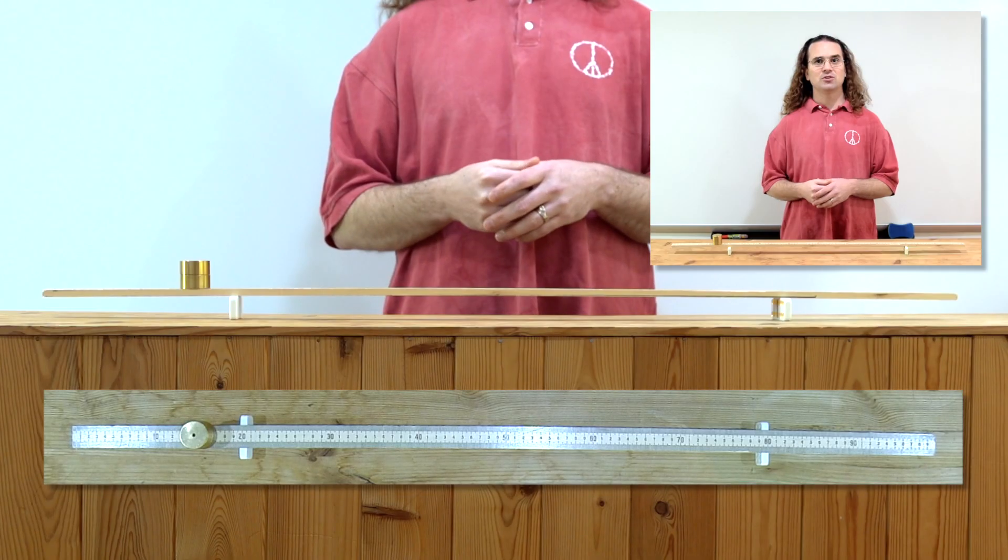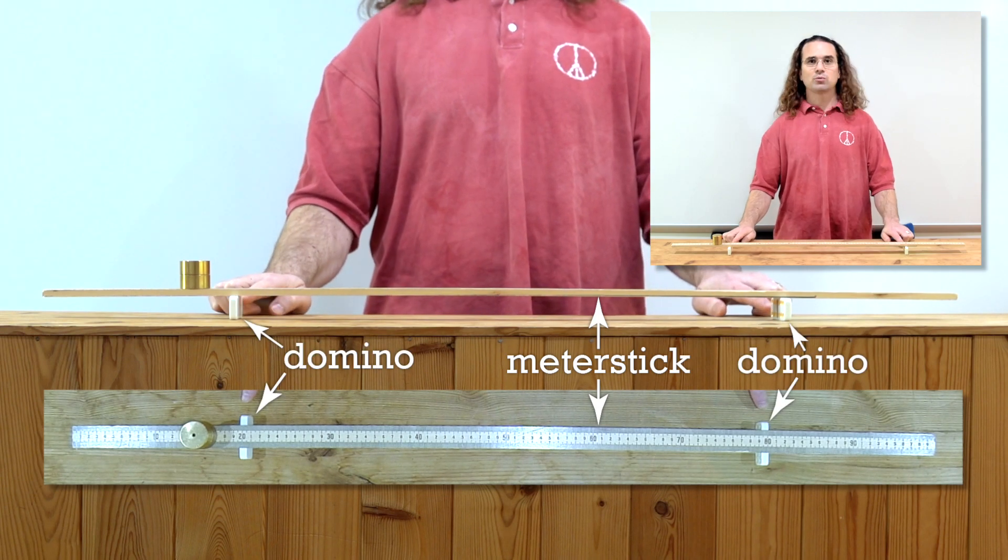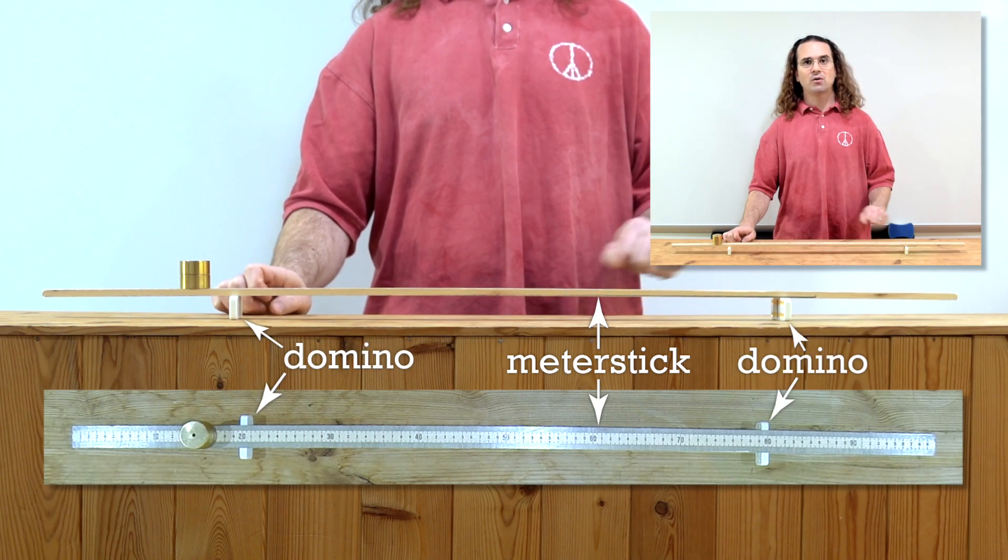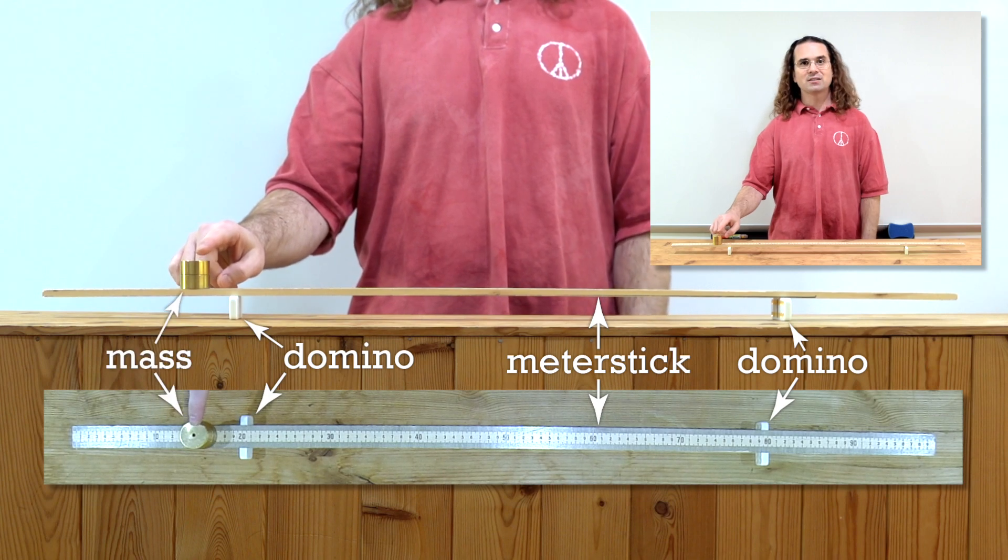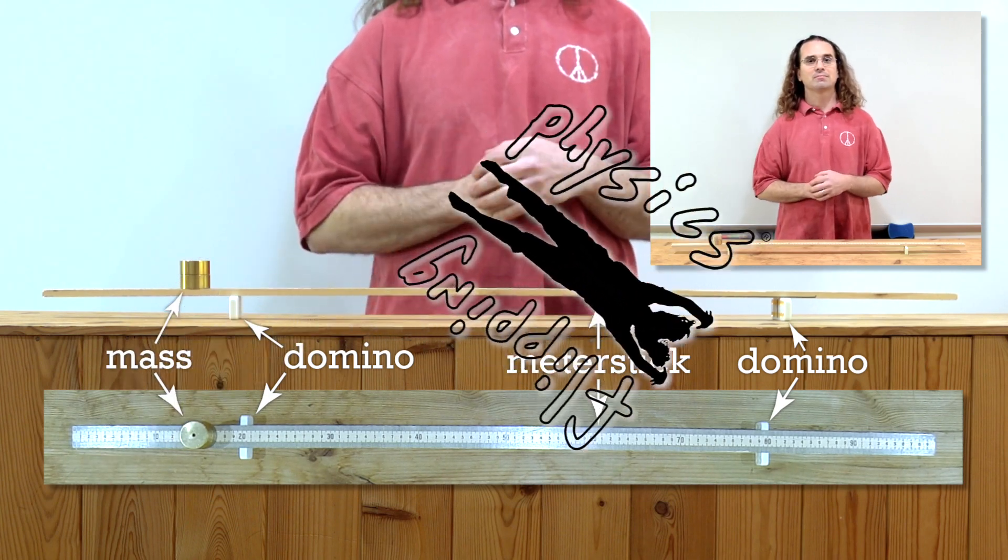We are going to model this using a meter stick as the scaffold, two dominoes which will support the scaffold from below, and a 200 gram mass which will represent the painter. Flippin' physics!